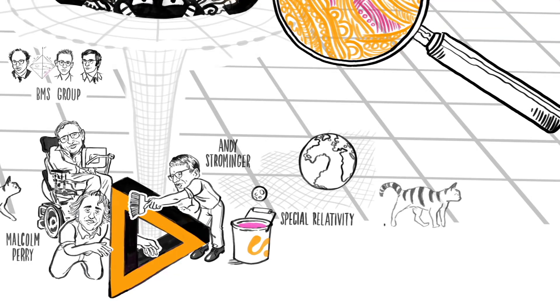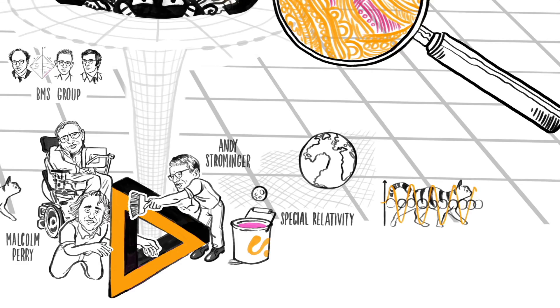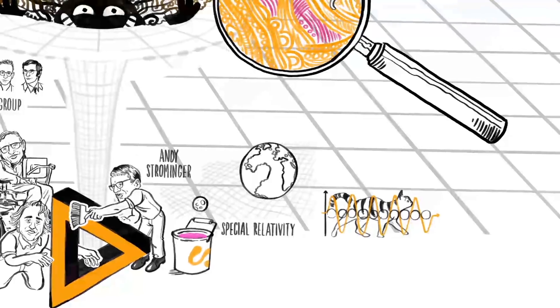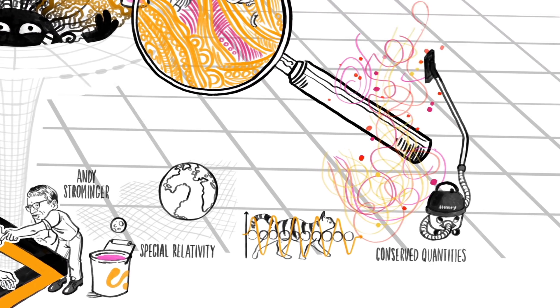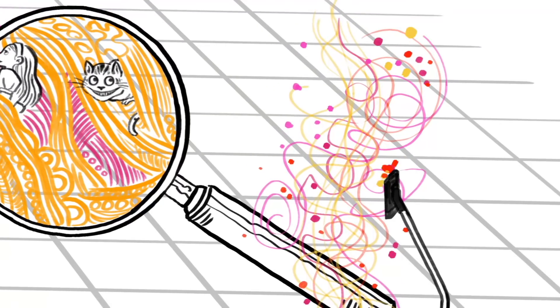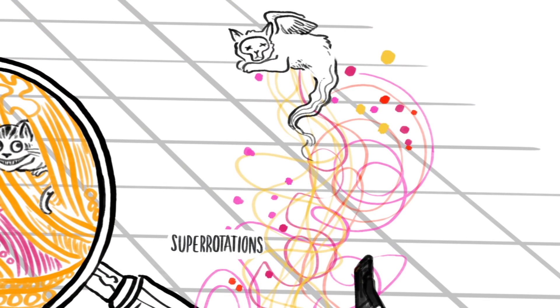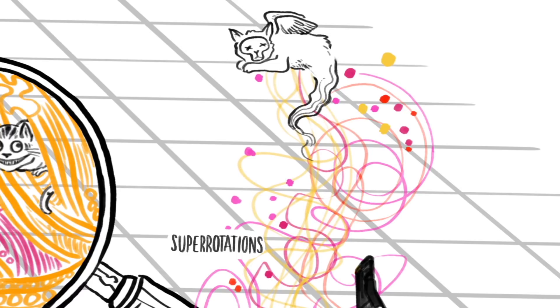It is likely that these supertranslation charges do not contain all of the information, but the rest might be accounted for by additional conserved quantities due to an extra collection of symmetries called superrotations, which are as yet not well understood.